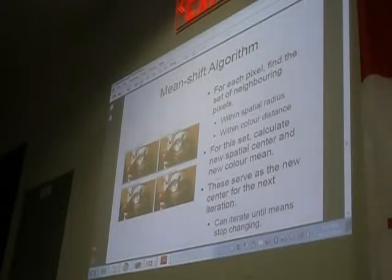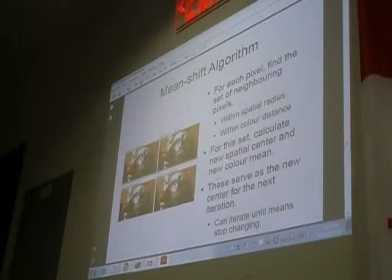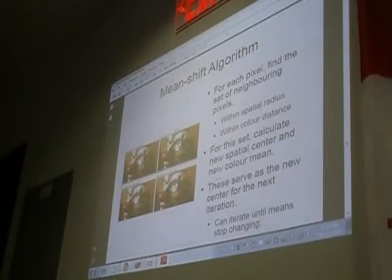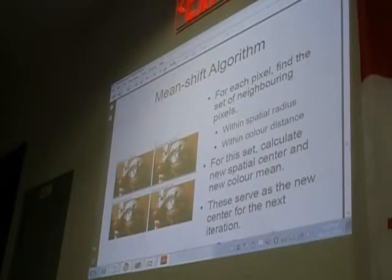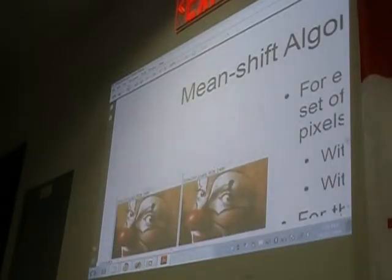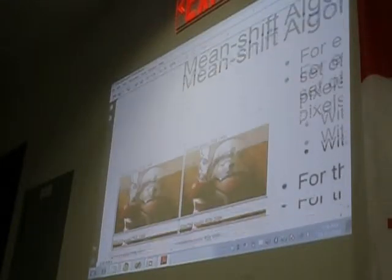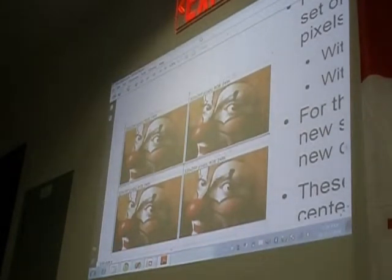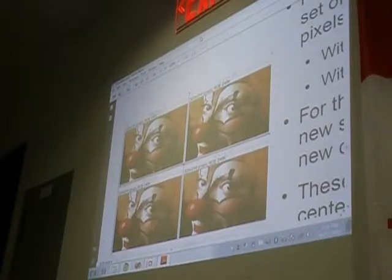For each iteration that you run the mean shift algorithm, you'll find the mean of that — both the spatial and color mean of each pixel — and that would serve as the new center for that grouping of pixels. It might be hard to see here; I don't know if I can zoom in on this image a bit. It shows pretty well what I mean. I'm not sure if you can see up here, but yeah, I think so.